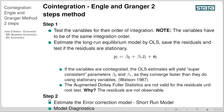In step two of the Engle-Granger method, if the variables are co-integrated, we then estimate the error correction model — normally called the short-run model — and we perform model diagnostics.